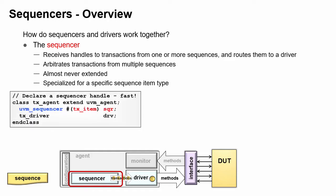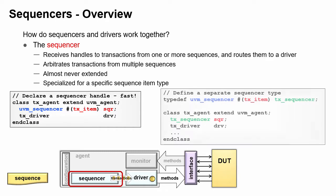Here are two ways to declare a sequencer in an agent. The fast way is shown in the TX agent class on the left, where a handle, sqr, is declared as type UVM sequencer that is specialized to carry TX item objects. The other way to declare a sequencer handle is by creating a new type, TX sequencer, shown in green, then use that type to declare the SQR handle in TX agent. This style is helpful if you need to declare TX sequencer handles in multiple places.